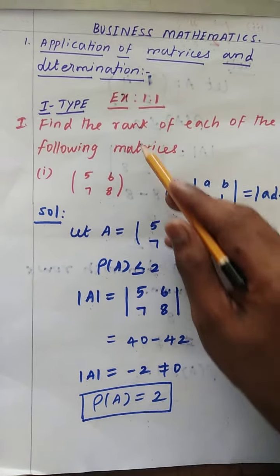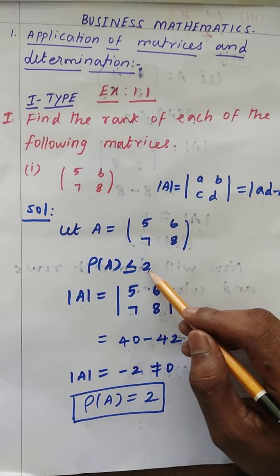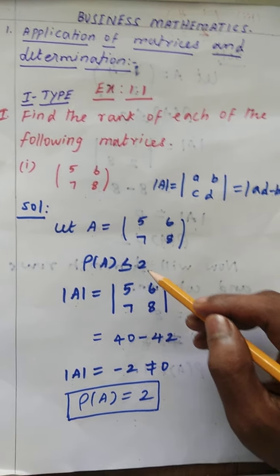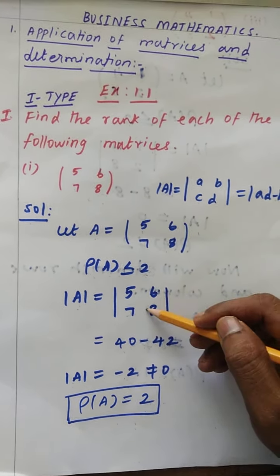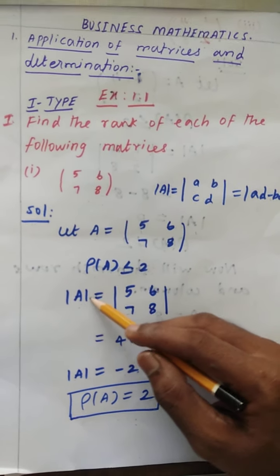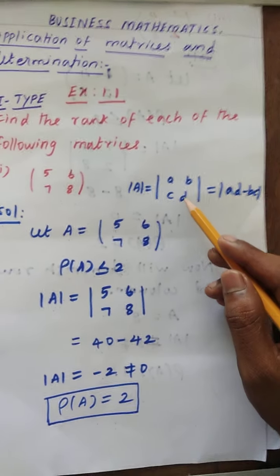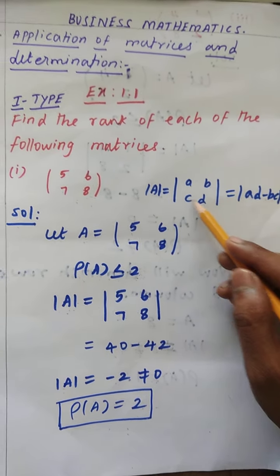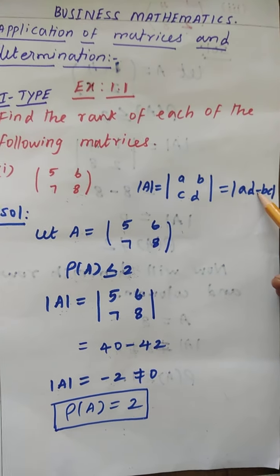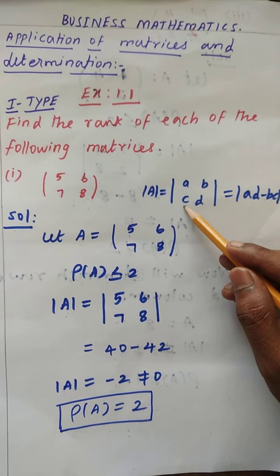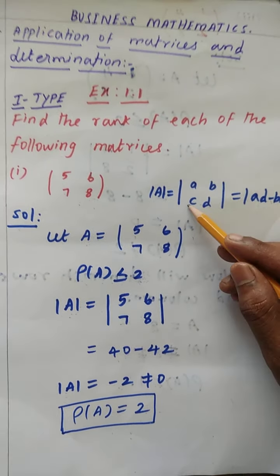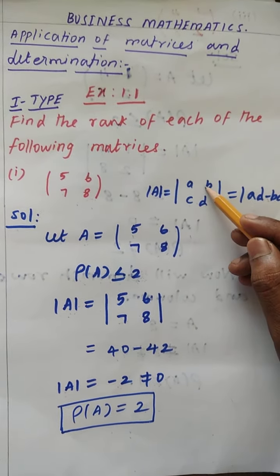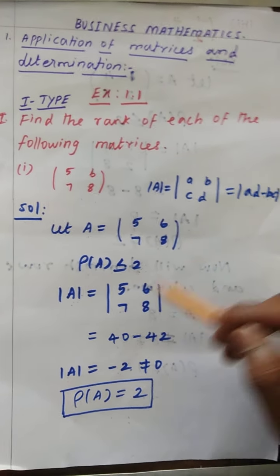This is a 2×2 matrix, so rank of A is less than or equal to 2. Its maximum possible rank is 2 and minimum possible is 1. This is the assumption. Next step: find the determinant. We already studied in the previous classes how to find the determinant. For a 2×2 matrix [A, B; C, D], the determinant is AD minus BC.